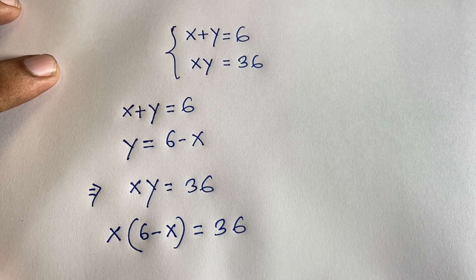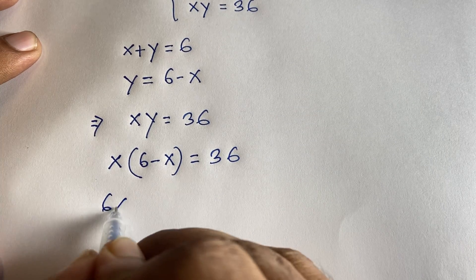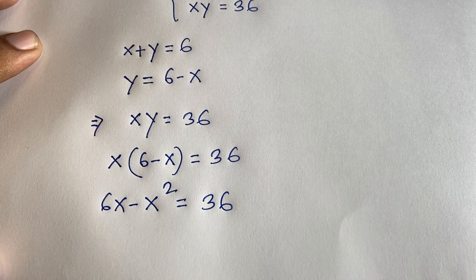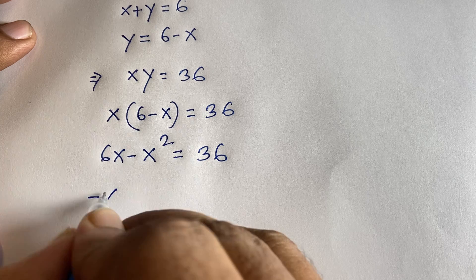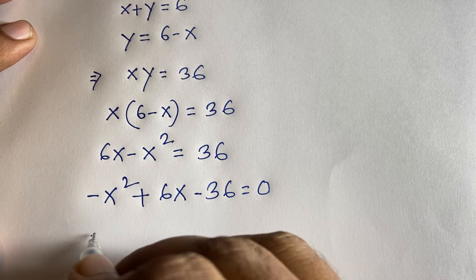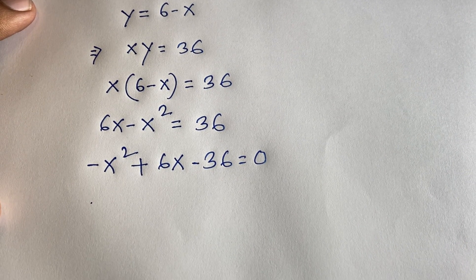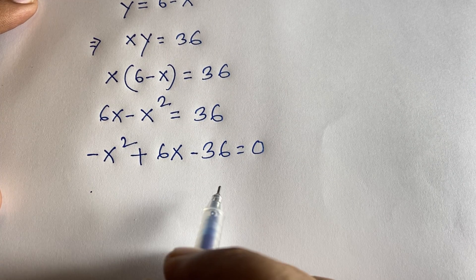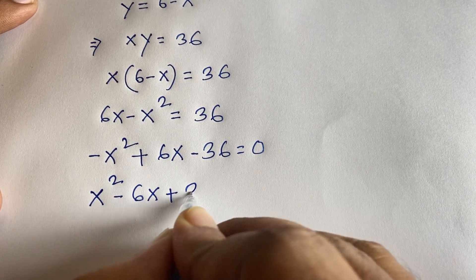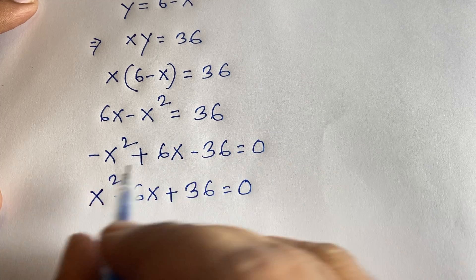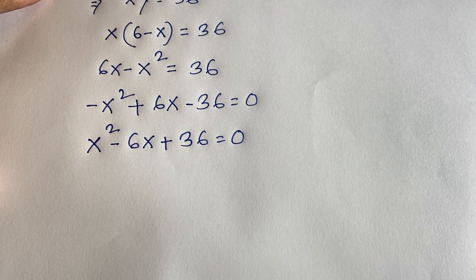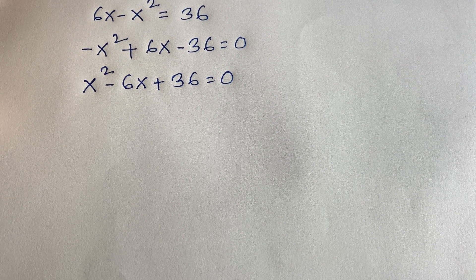So it will be x times (6 minus x) is equal to 36. Expanding gives 6x minus x squared is equal to 36. Rearranging, we get minus x squared plus 6x minus 36 is equal to 0. Multiplying both sides by minus one gives x squared minus 6x plus 36 is equal to 0.